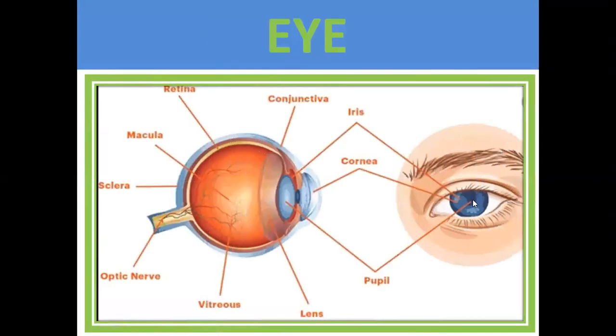Let's see the anatomy of the eye. This is the structure of the eye. We have cornea, iris, pupil, lens, vitreous, optic nerve, sclera, and macula.